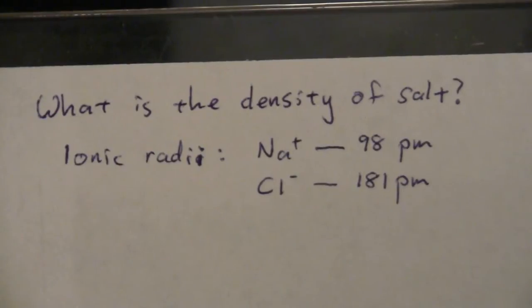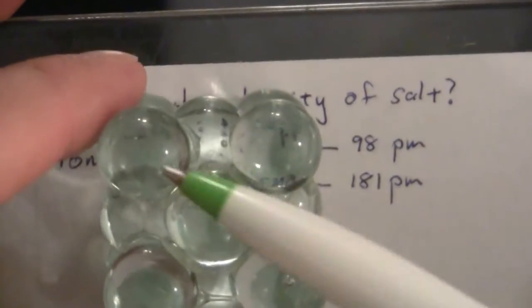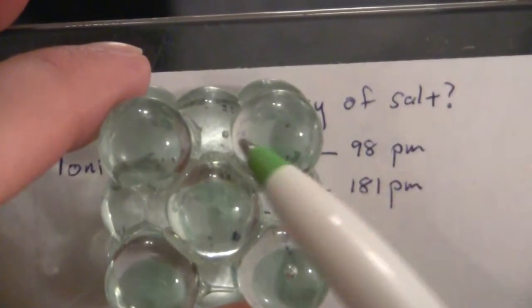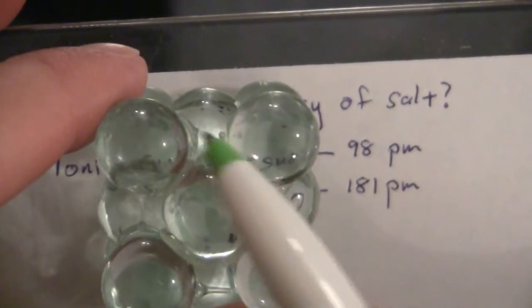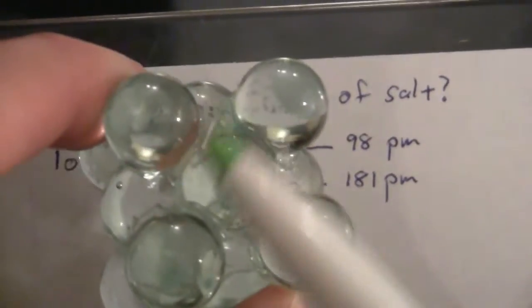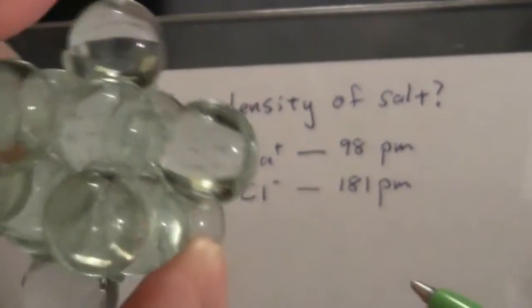and also given that it has a face-centered cubic arrangement for the chloride ions as well as the sodium ions. Those ones aren't in this model, but they would occupy the holes here, the octahedral holes in this model.